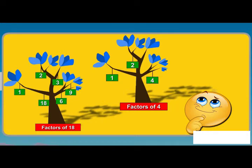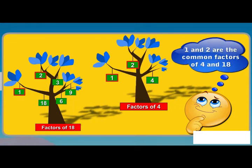Which numbers are factors of both 4 and 18? Or we can say, tell the numbers which are on both the trees. Here we can see that 1 and 2 are the numbers which are the factors of both 4 and 18 and are on both the trees. The numbers 1 and 2 are called the common factors of 4 and 18.